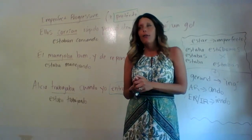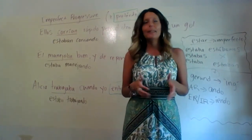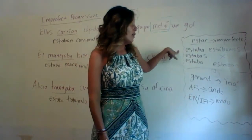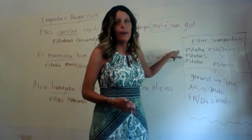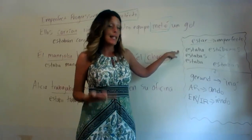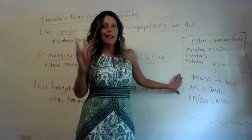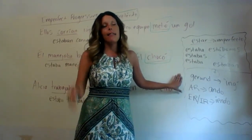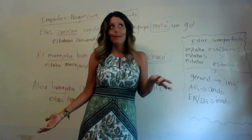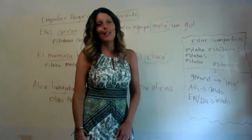There's less room for making errors. You just have to remember estar in the imperfect — estaba, estabas, estábamos, estaban — and then add the appropriate gerund ending. The imperfect progressive is usually pretty easy for students to pick up.